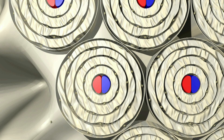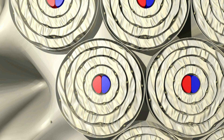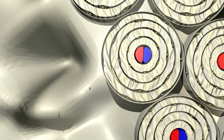A cylindrical collection of lamellae surrounding a Haversian canal is known as an osteon. The osteon is surrounded by a cement line that forms an outer border. In cortical bone, the osteons are packed closely together to form dense, hard bone. Now let's move past the cortex and into the cancellous bone.